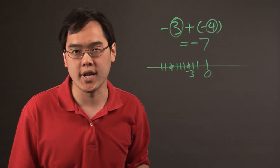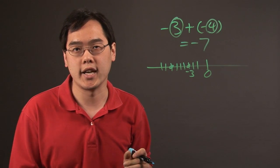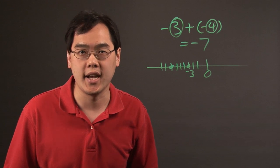So when you're adding two negative numbers together, you're continuing the negative path, and so that's why the number always stays negative.